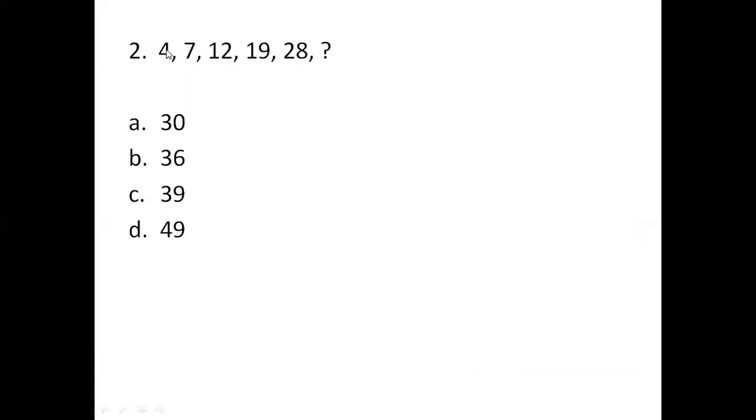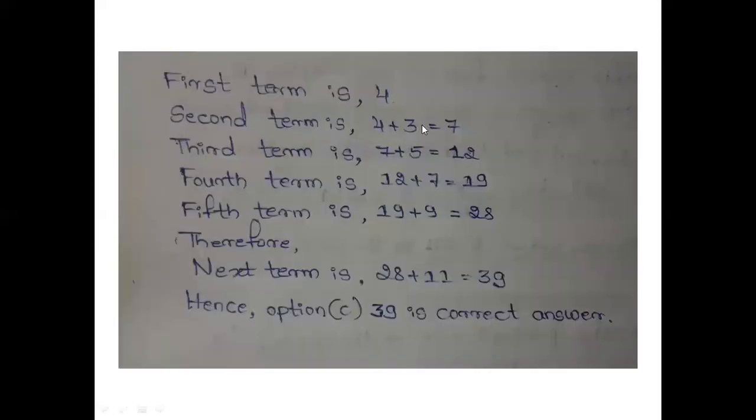First term is 4. 7 minus 4 is 3. 4 plus 3 is 7, 7 plus 5 is 12, 12 plus 7 is 19, 19 plus 9 is 28. Next term is 28 plus 11 equals to 39. Hence option C 39 is correct answer.